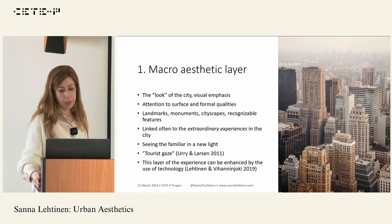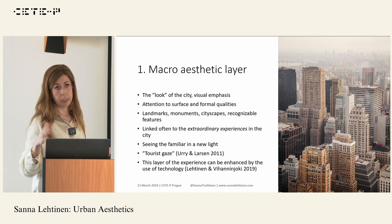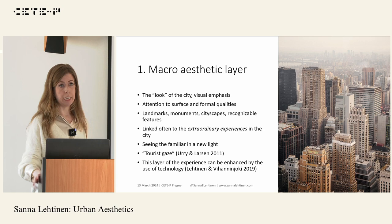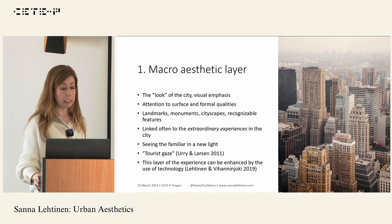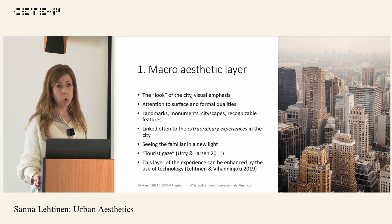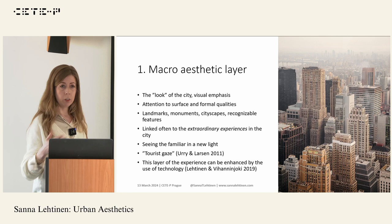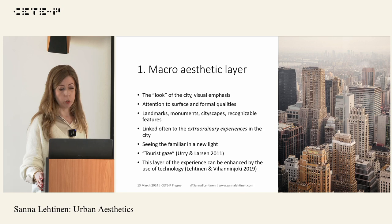I use a division into three different dimensions or layers of urban aesthetics. The first, macro aesthetic layer, refers to those ideas where we enjoy cityscapes, beautiful façade buildings, and focus on the visual emphasis of an urban environment. This is when we pay a lot of attention to surface and formal qualities — instant impressions of a new place, linked to the tourist approach of coming to a city for the first time. We pay more attention to landmarks, monuments, cityscapes, and recognizable features.